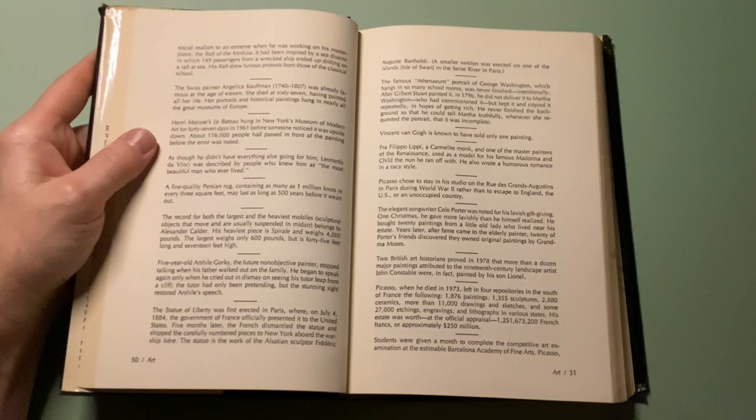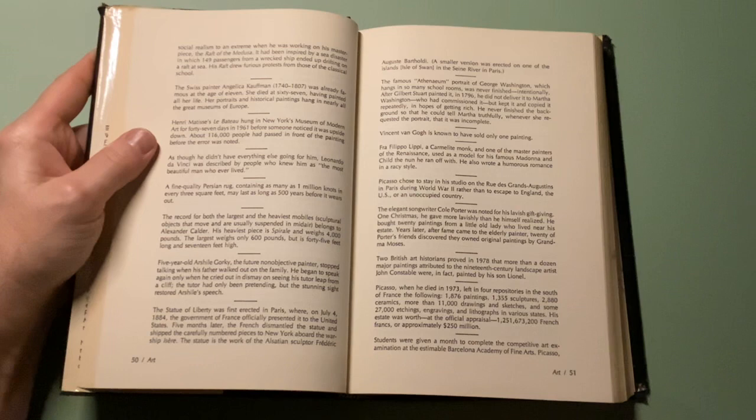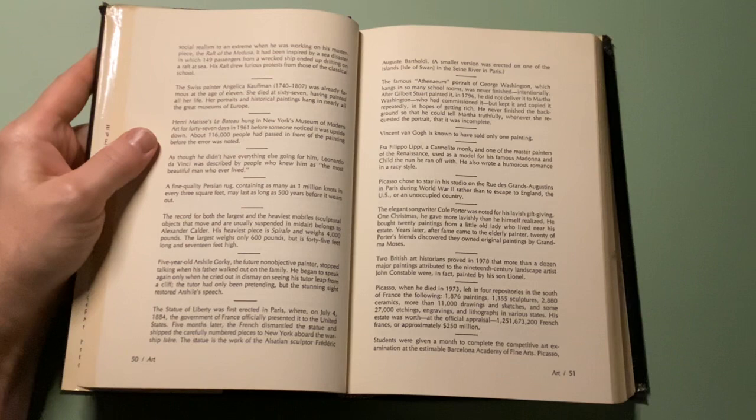The elegant songwriter Cole Porter was noted for his lavish gift-giving. One Christmas, he gave more lavishly than he himself realized. He bought 20 paintings from a little old lady who lived near his estate. Years later, after fame came to the elderly painter, 20 of Porter's friends discovered they owned original paintings by Grandma Moses.